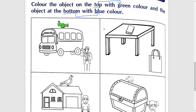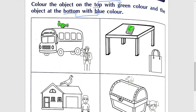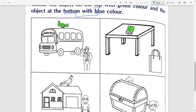Second box में top पर क्या है — book, तो इसमें book को green करेंगे आप। Proper way में, अच्छे तरीके से आपको color करना है — wax color से या pencil color से।